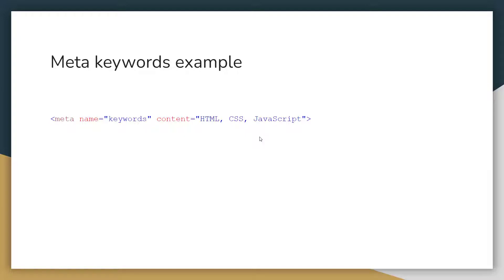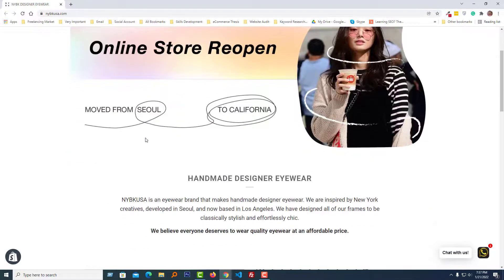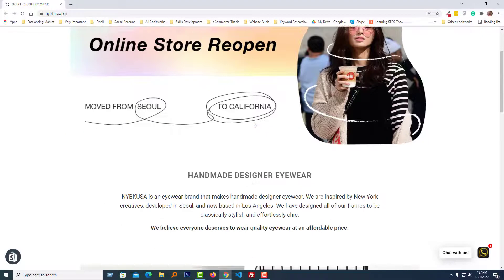Now I'm going to discuss in detail about meta keywords. In this part I will show you how to generate meta keywords for your website and how you can use meta keywords in your Shopify online store. Here is one of my client's websites — he basically sells sunglasses. So now I'm going to find keywords for this website.